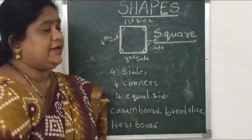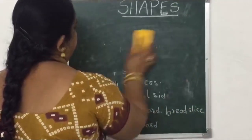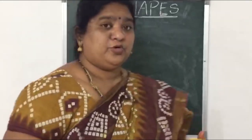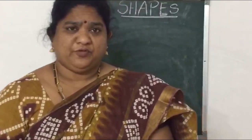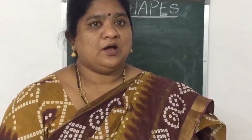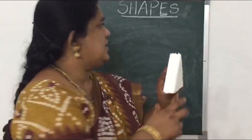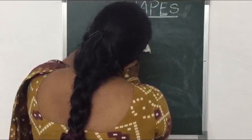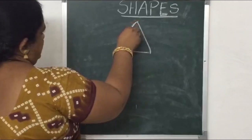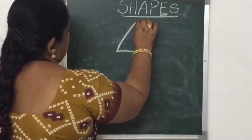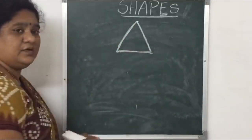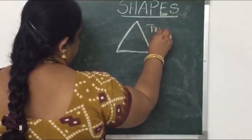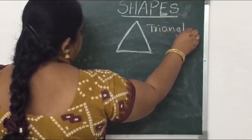What is the next shape, children? Any guesses? If you go to a movie or a shopping mall and feel hungry, you will ask your parents to buy some popcorn, samosa, or anything. What is the shape of samosa? Triangle. T-R-I-A-N-G-L-E. Triangle.